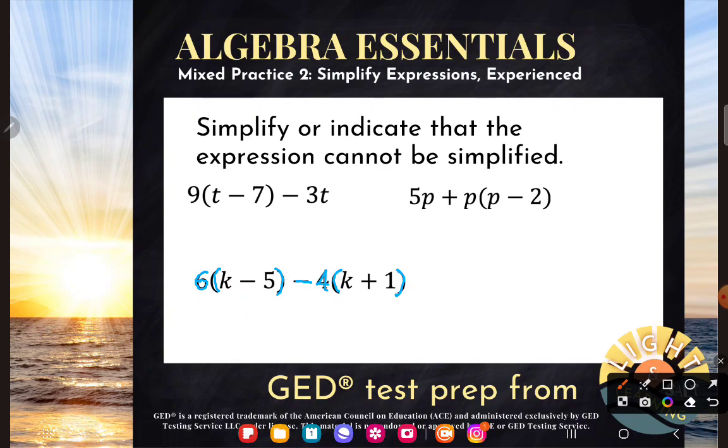So let's do that multiplication first and we can do them both since they don't share any numbers. So six times k is 6k and six times negative five is negative 30. And now remember, keep your sign, keep your sign, keep your sign. Negative four times k is negative 4k. And here's where everybody messes up. Negative four times positive one is negative four.